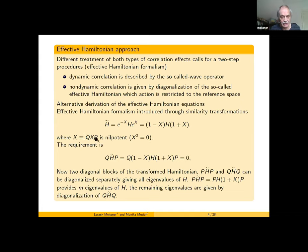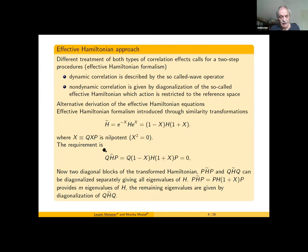Let us consider a similarity transformation of the Hamiltonian where we have this X operator whose action is restricted from the right to the reference space and from the left to the orthogonal space. This operator is nilpotent, so we have this simple expression for the transformed Hamiltonian. We require this similarity transformation to cause the off-diagonal part of the transformed Hamiltonian to be equal to zero.